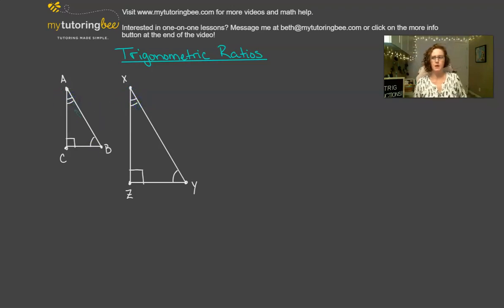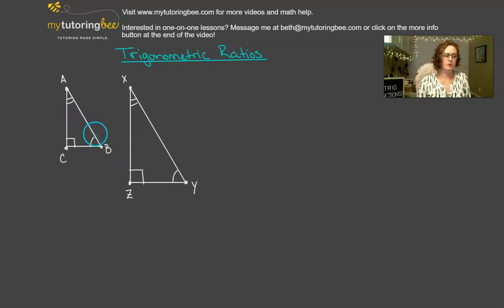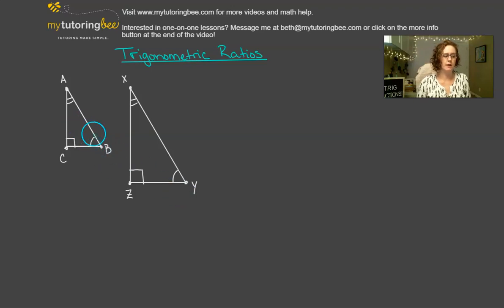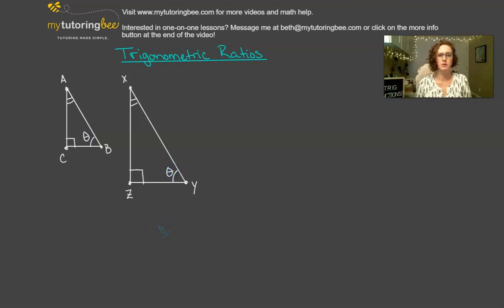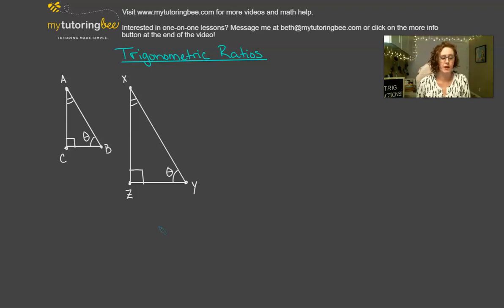So let's talk about the ratios of that triangle. For right now, we're going to focus on angles B and Y, and I'm going to go ahead and put in the Greek letter theta here. We're calling this angle measurement theta. Theta is just like any variable — it is just there to stand for a number that we don't know yet.